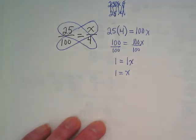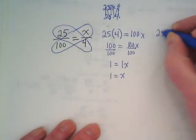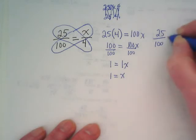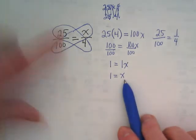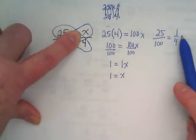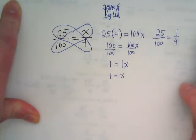That means I can go back to my original proportion and I can show that 25 over 100 is equal to 1 over 4. Because I took that 1 equals X and I put it in where the X was. Thumbs up if that makes sense to you. Turn your paper over.